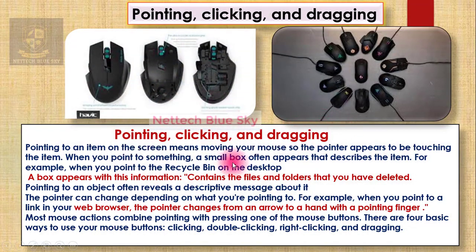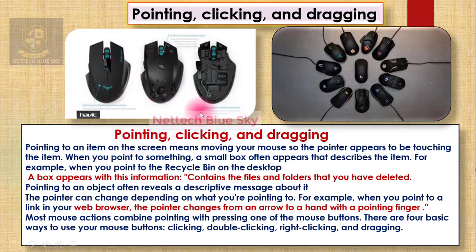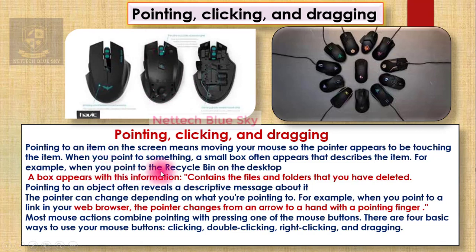A small box often appears to describe the item. For example, you click the Start button, you click File Manager, you click to open files, you double-click to open. You know your shortcuts — that means you need one type of mouse pointer action. The second is clicking, which you need to open your items and shortcuts.